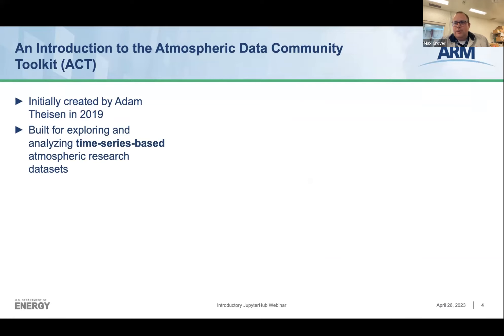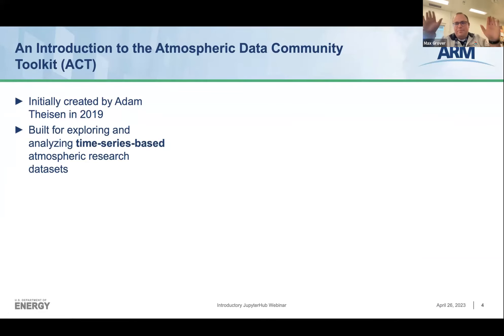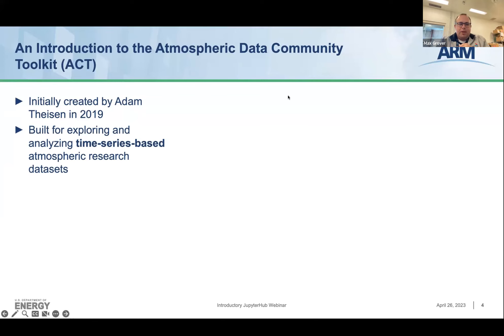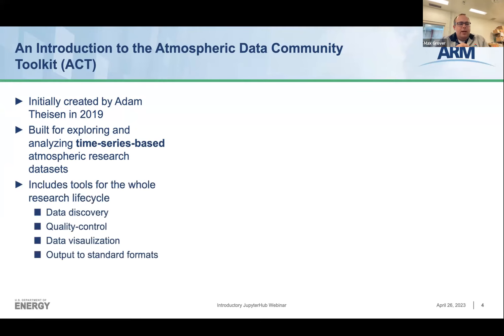The other toolkit we work on is the Atmospheric Data Community Toolkit, or ACT. This was originally created by Adam Tyson in 2019 and is more focused on time series-based data sets — basically a lot of the instruments across ARM that aren't necessarily radars. This could include things that measure temperature, pressure, humidity, that sort of thing, as well as a lot of the radiometers. Basically, a lot of the other instrumentation that's not necessarily radars.